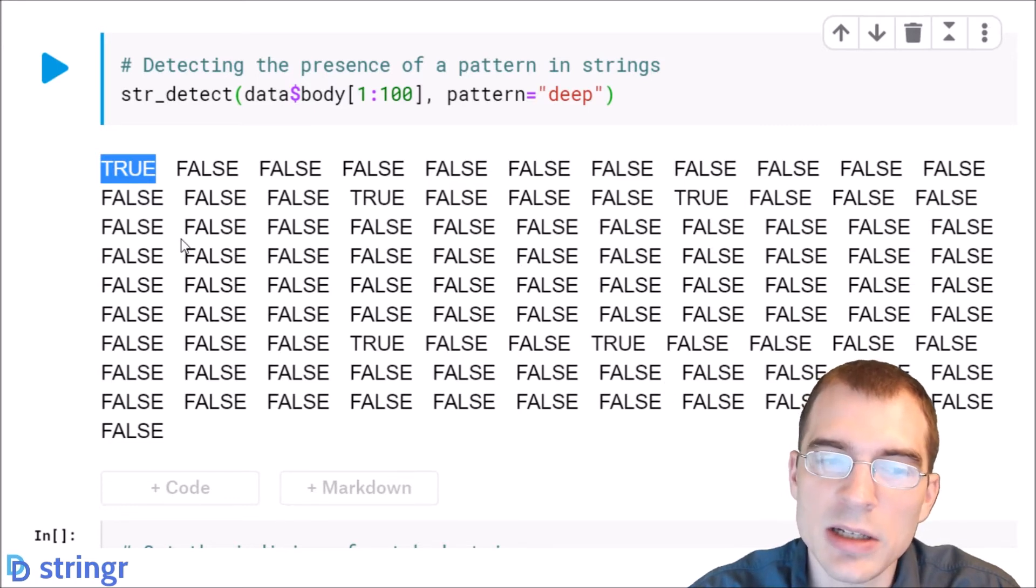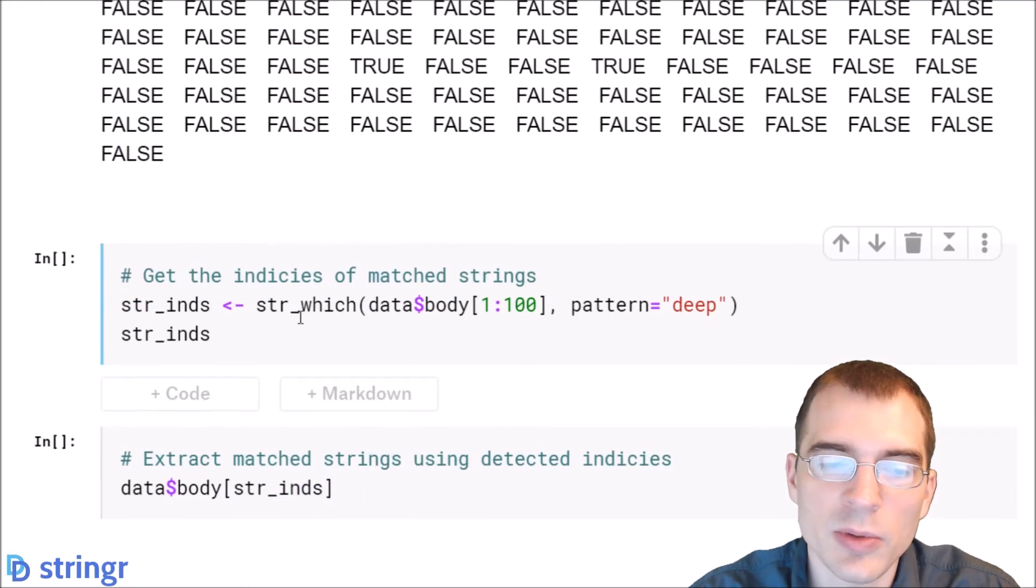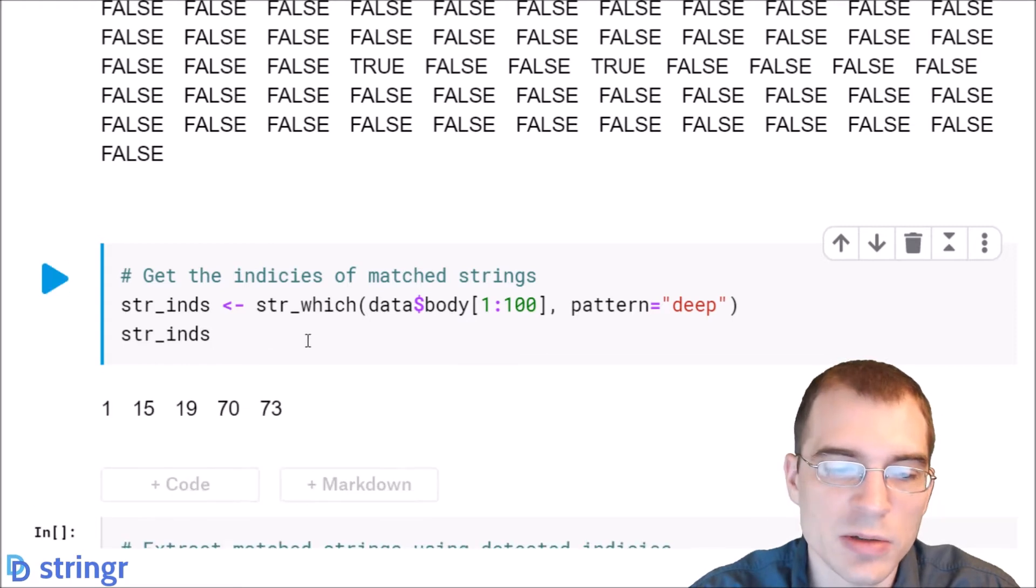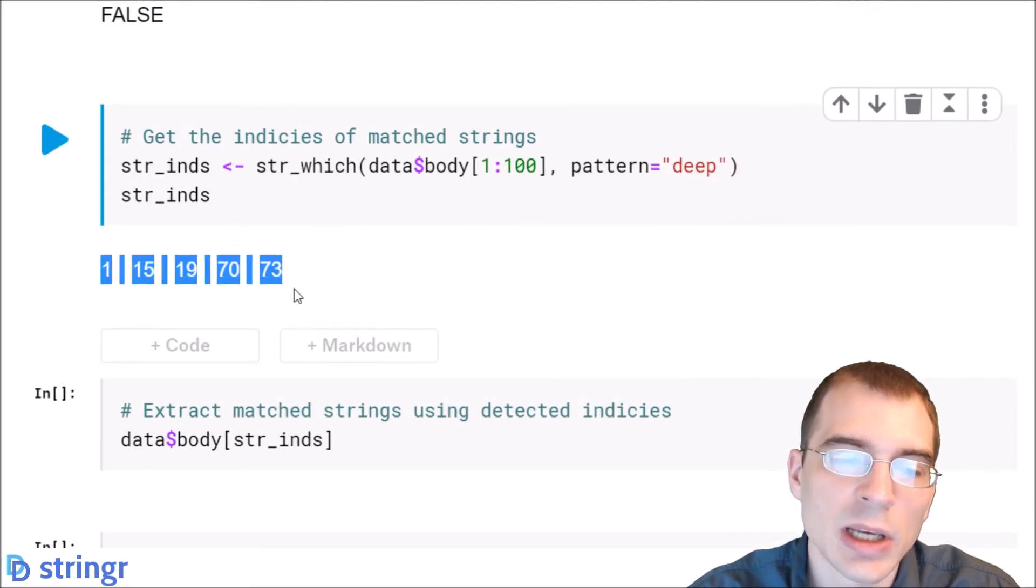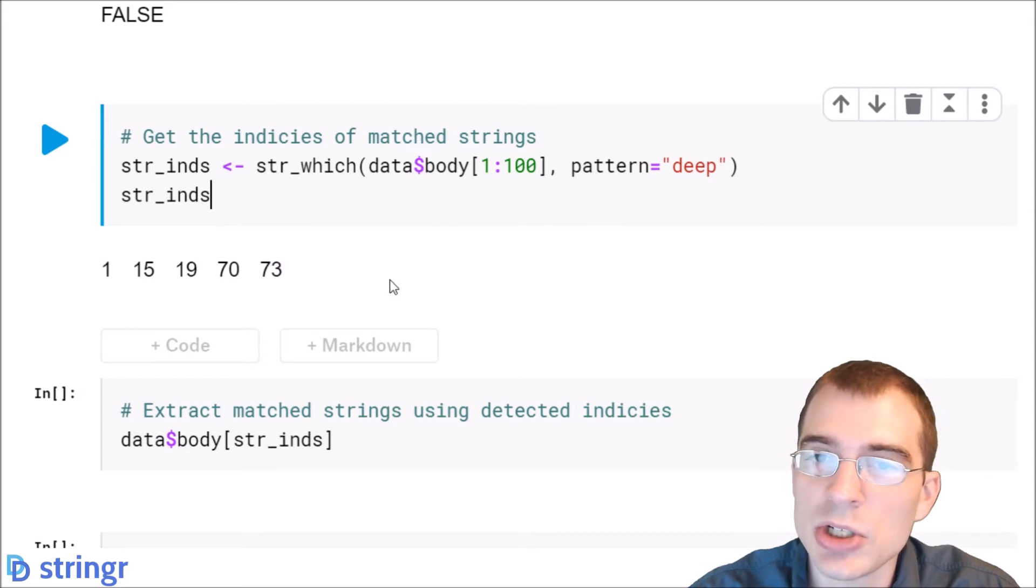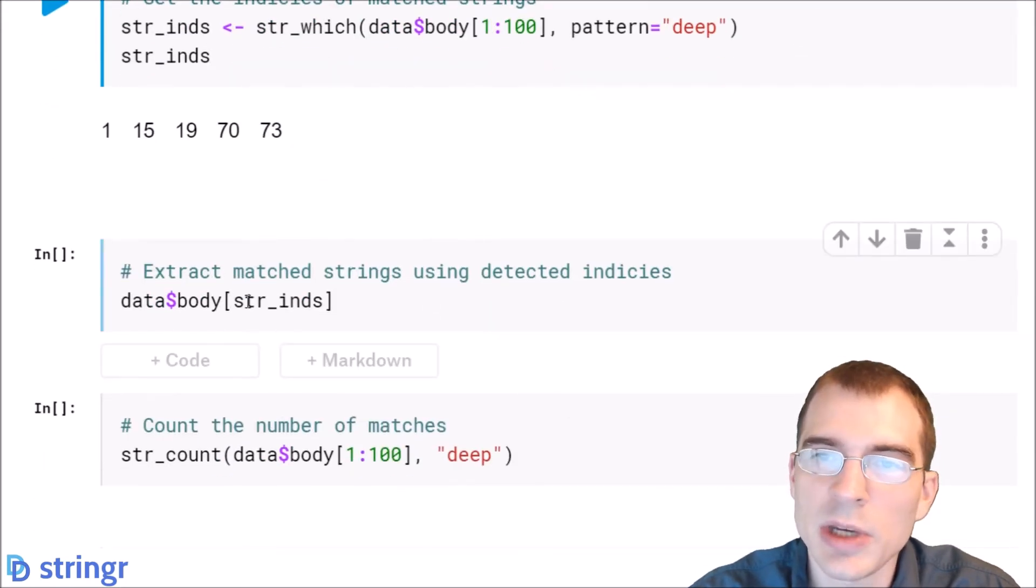Now if we wanted to get the indices where it was true instead of the true false values, we can do that with the which_str function. So in this case we're passing in the same data, the same pattern. We're just going to get the indices instead of the true false values. So that shows us where that is true. And then we can use these indices to extract those records where that was true just by using them as the indexer into that vector.